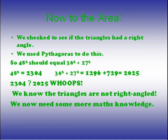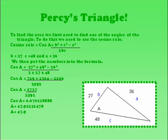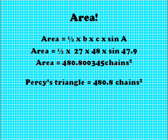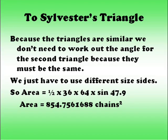First, we used Pythagoras to see if we had a right-angled triangle. Unfortunately, that wasn't the case. Next, we used the cosine rule to find an angle in the triangle. Now we know an angle, we can use area equals half BC sine A to find the area of a triangle. Because the triangles are similar, we can use the same angle to work out the area of Sylvester's field.